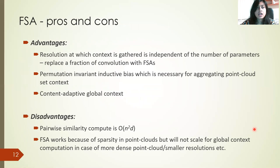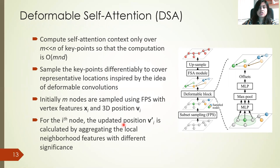The advantage of the full self-attention module is that the resolution at which the context is gathered is independent of the number of parameters, so we can replace a fraction of the parameter-heavy convolutions with this module. The disadvantage, however, is that this pairwise similarity is quadratic in complexity and cannot scale to more dense point clouds. Hence, we propose the deformable self-attention module, which can compute self-attention context over a small number M of key points — much smaller than N — so the computation is O(MND) and not quadratic.